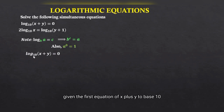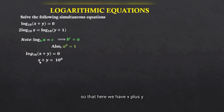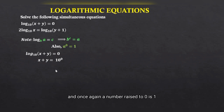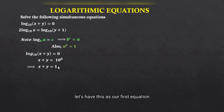We are going to apply these to the first equation. Given the first equation, logarithm of x plus y to base 10 is equal to 0, we express this in index notation so that we have 10 raised to 0 is equal to x plus y. Since a number raised to 0 is 1, this equation becomes x plus y is equal to 1. Let's call this our first equation.